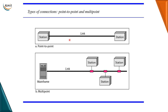The pictorial representation shows a point-to-point connection where a dedicated link carries data traffic between only two stations, with the channel capacity used entirely by those two devices. A multipoint or multi-drop connection has multiple devices connecting to a single shared link, which is either shared spatially or temporally.